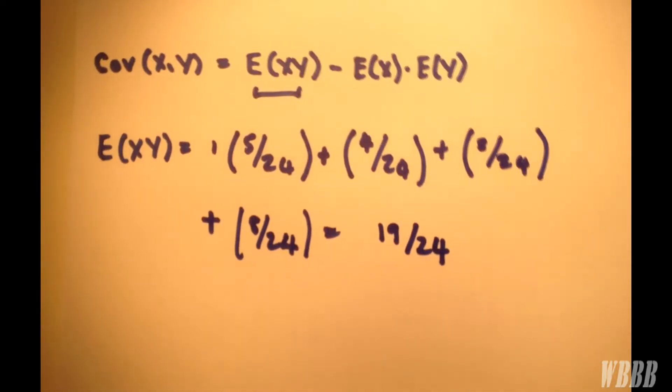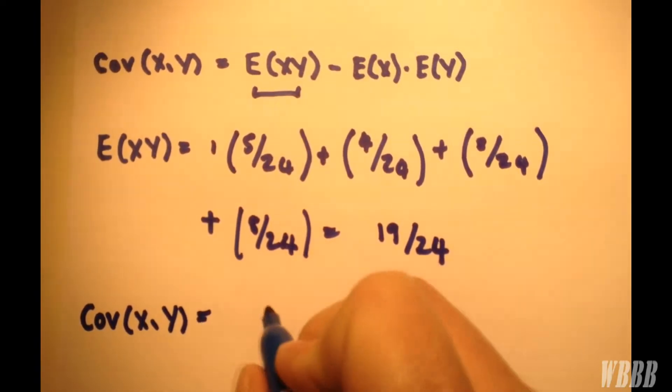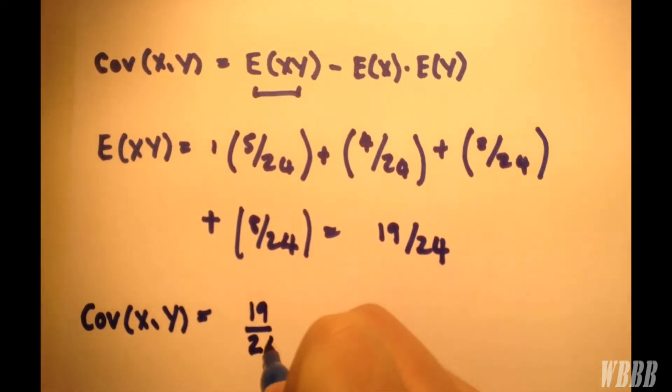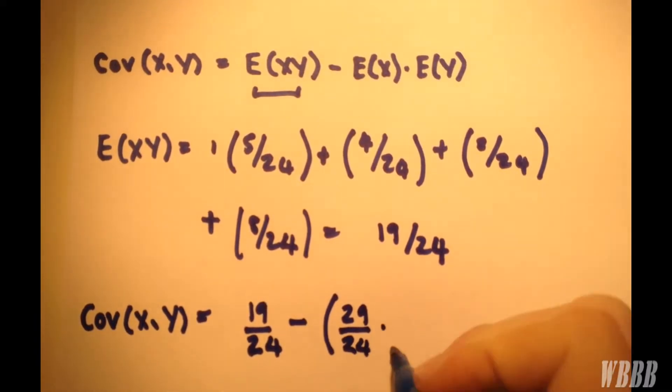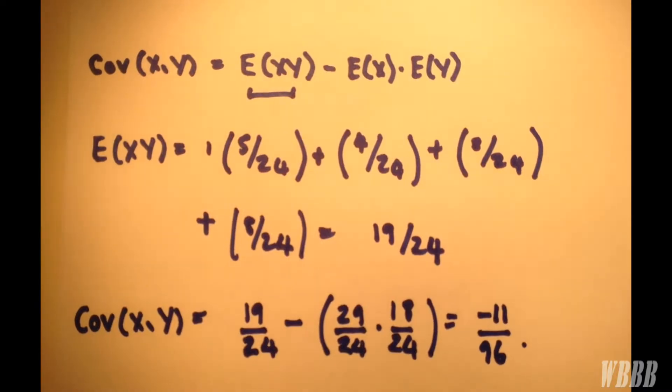So now we can calculate the covariance of X, Y, which is equal to E(XY), which is 19/24, minus the expected value for X, which in our first video we worked out was 29/24, multiplied by our expected value of Y, 18/24, and this works out to give us minus 11/96.